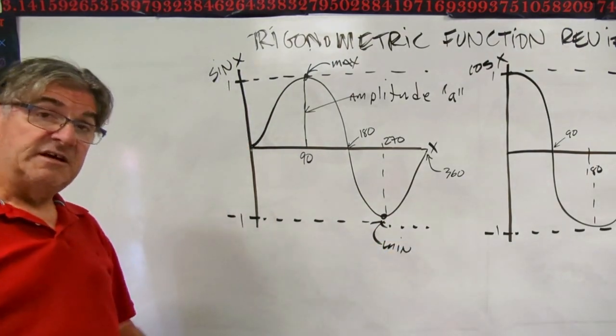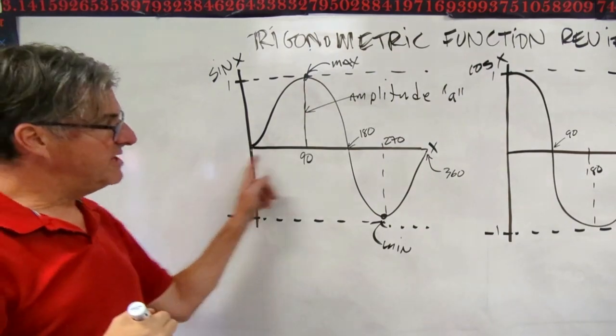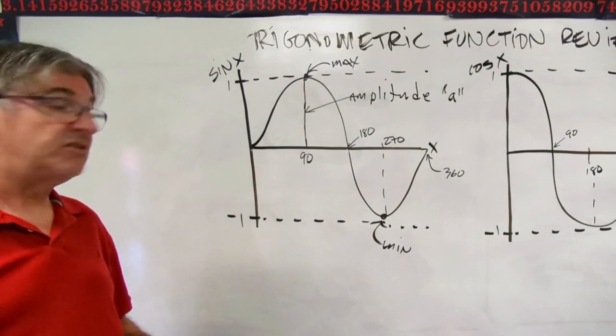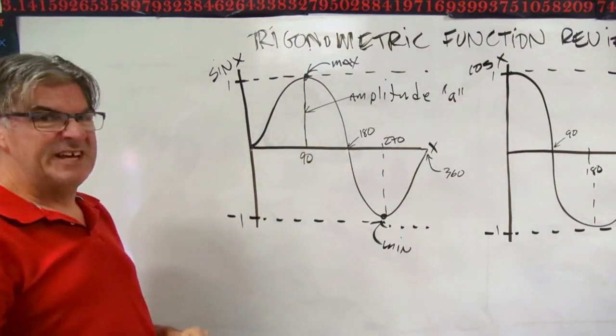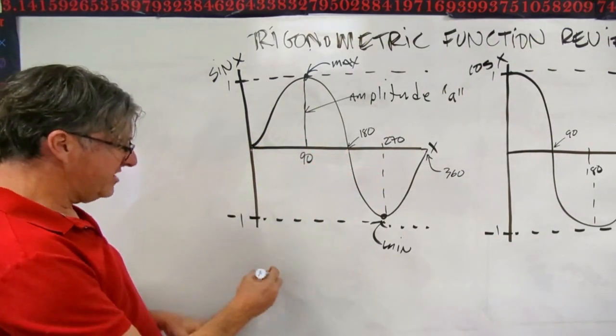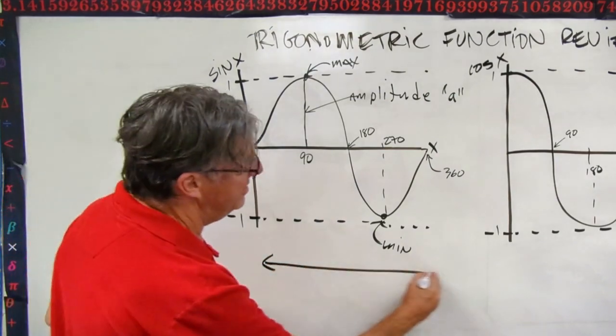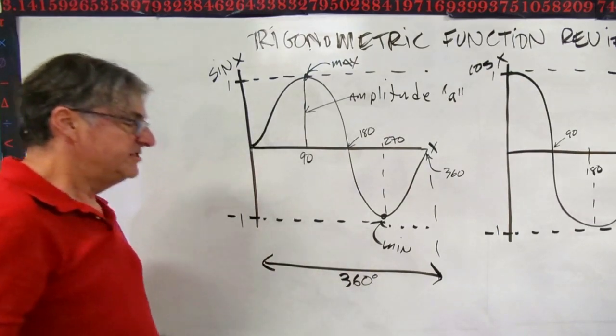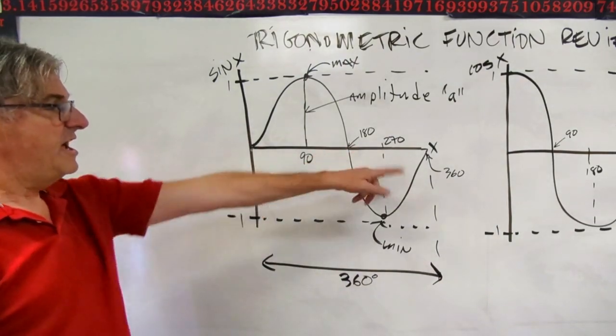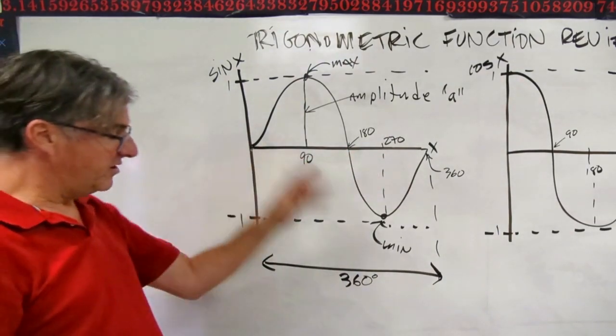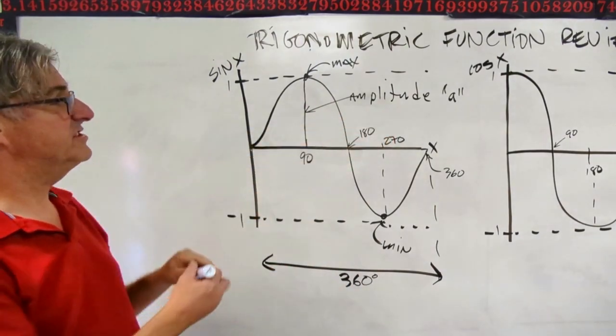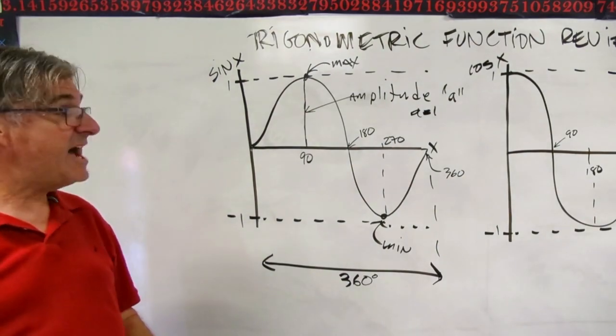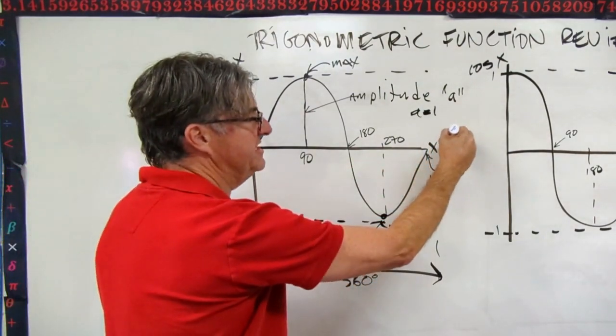The period is the amount of time, the amount of x, the function takes to go through one complete cycle. So you can see the way I've drawn this, I've drawn one complete cycle. And that's from here to there. And that's 360 degrees. So this function, x versus sine x, has a period of 360, has an amplitude, in this case, of 1, a equals 1.